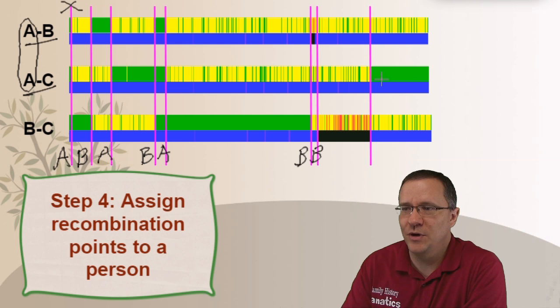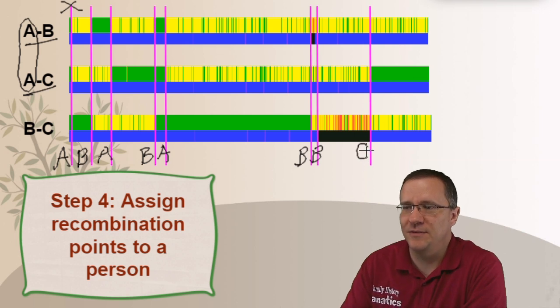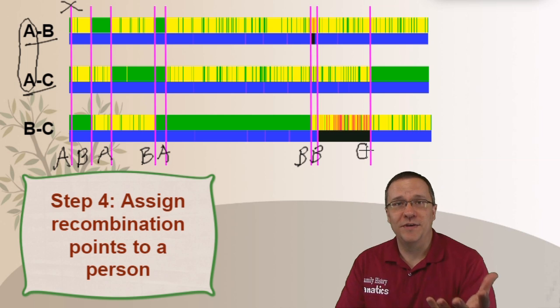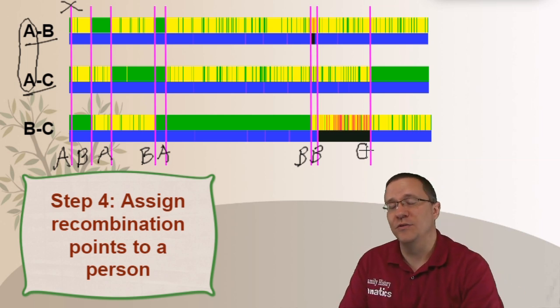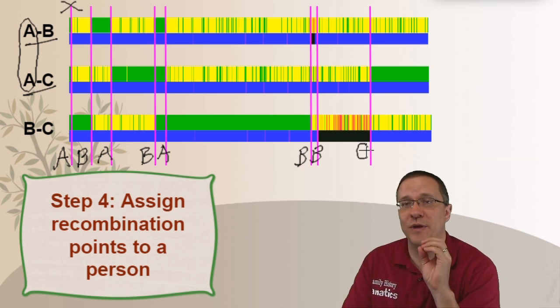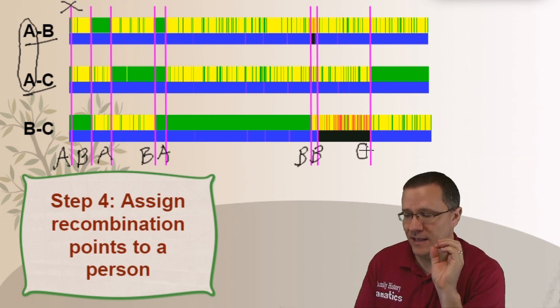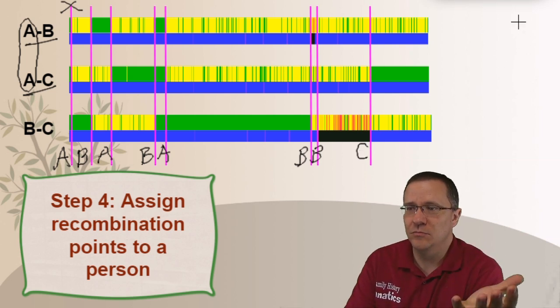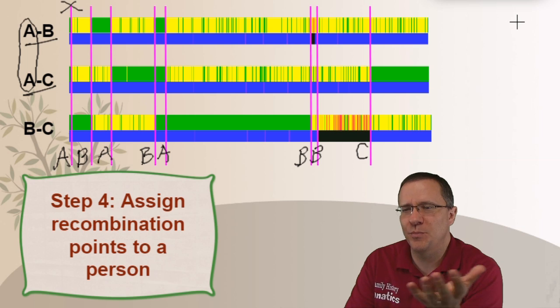But the next one is also a B. And this last one, well that looks like that's a C. So what we've done is we've gone through each one of these recombination points and we have made an assignment as to which person that recombination point belongs to.